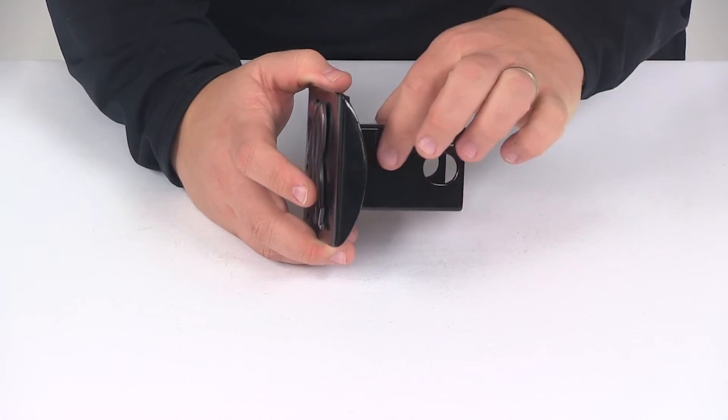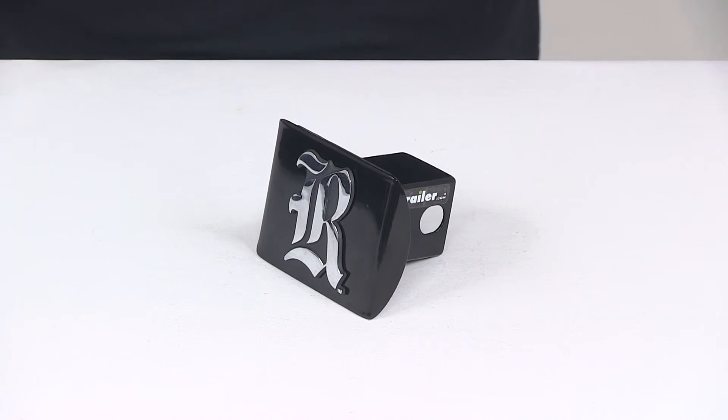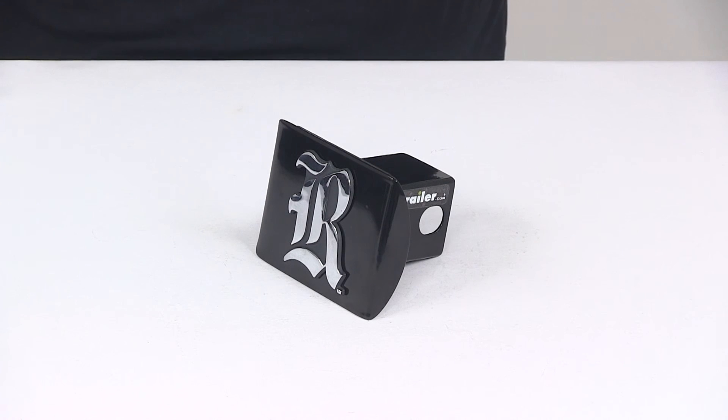Very simple installation. Just slide it into the receiver tube of your hitch, line up your pin holes, and secure it with a hitch pin and clip or a hitch lock. That's going to do it for today's look at the Rice University 2 inch hitch cover from AMG.